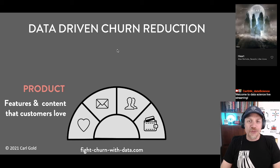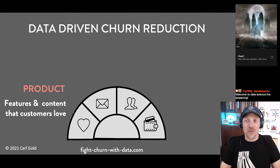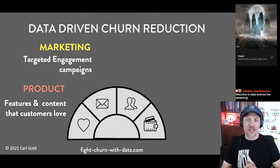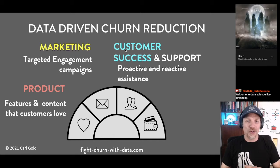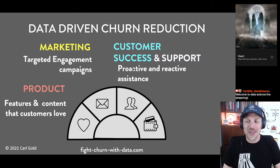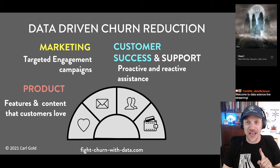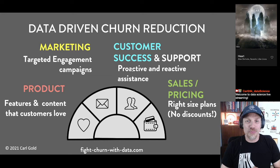Fighting Churn with Data is really about data-driven churn reduction — using data at your product, service, or company to do something about churn. First, you can make a great product by using data to figure out what customers love. Then you can do targeted marketing using data to figure out what message really engages customers. There's also customer success — being proactive and reaching out before customers churn, using data to figure out which ones are about to churn. Sales and pricing are also important — using data to figure out how to value your product or service.